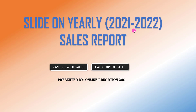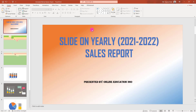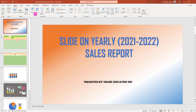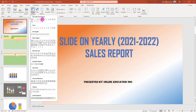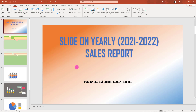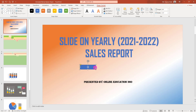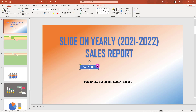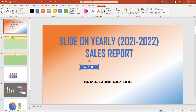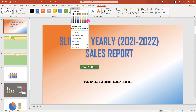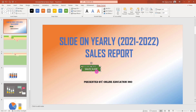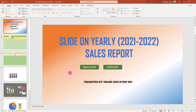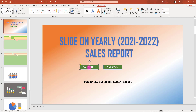Let's begin. This is our presentation. Go to Insert, then Shapes, click on the Rounded Corner Rectangle shape, and drag it onto the slide. Click on it and write 'Sales Slide.' Then go to Shape Format, go to Shape Fill, and choose a fill color. Press Ctrl+D to duplicate it, paste it, and place it here. Label this one 'Category.'